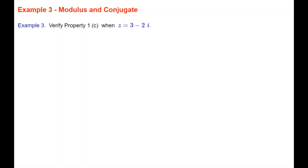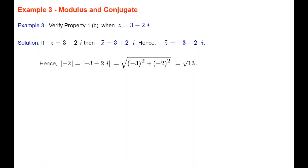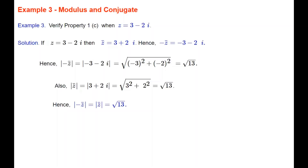Example 3 verifies property 1c when z equals 3 minus 2i. The conjugate of z is 3 plus 2i, so minus the conjugate of z is minus 3 minus 2i. The modulus of minus the conjugate of z is the square root of minus 3 squared plus minus 2 squared, which equals the square root of 13. The modulus of the conjugate of z is the square root of 3 squared plus 2 squared, also the square root of 13. The result holds: both are equal to the square root of 13.